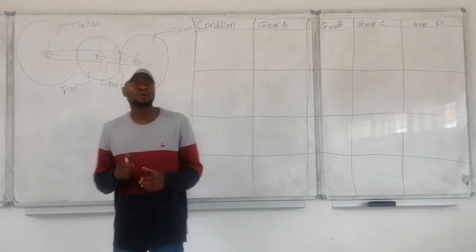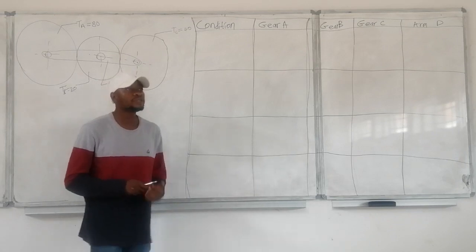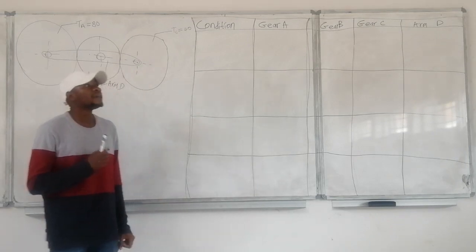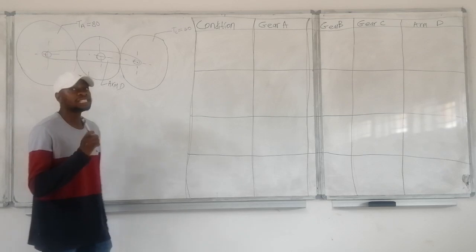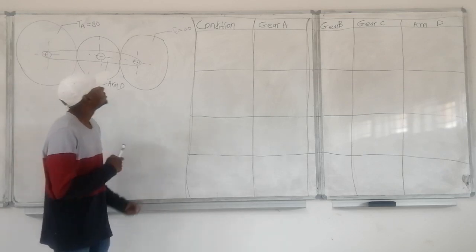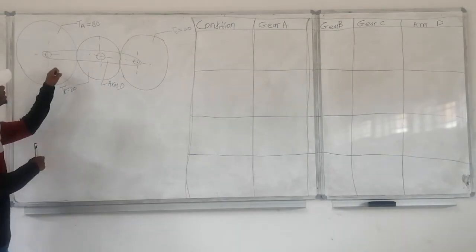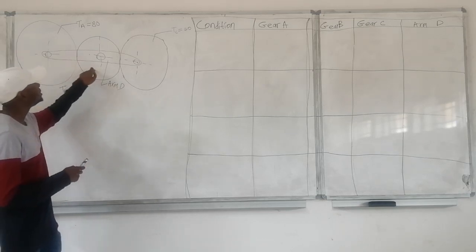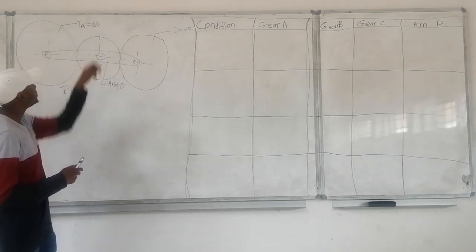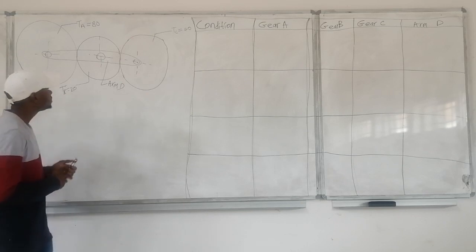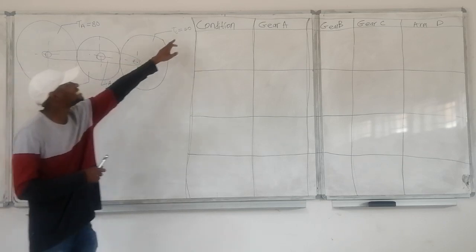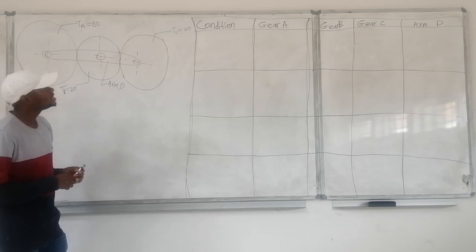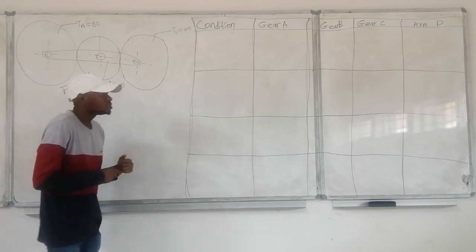Good day everyone. Today we will be dealing with exactly gears, which is N4 and N5 mechanical techniques. We were given three gears: gear A, B, and C. Gear A with 80 teeth, gear B with 20 teeth, and gear C with 40 teeth, and our arm which is arm D.